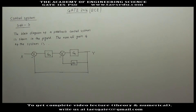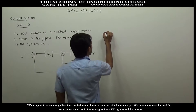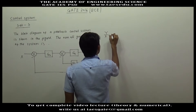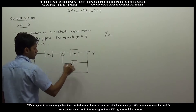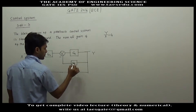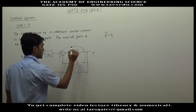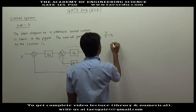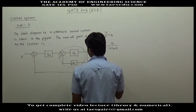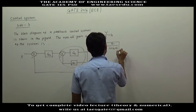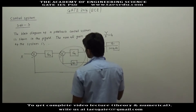In this system we have to find out the overall gain. The overall gain will be Y divided by X. This is a closed-loop system with feedback minus H1, so corresponding to this block we will have G1 divided by 1 plus G1·H1. To this block, G2 is connected in series.